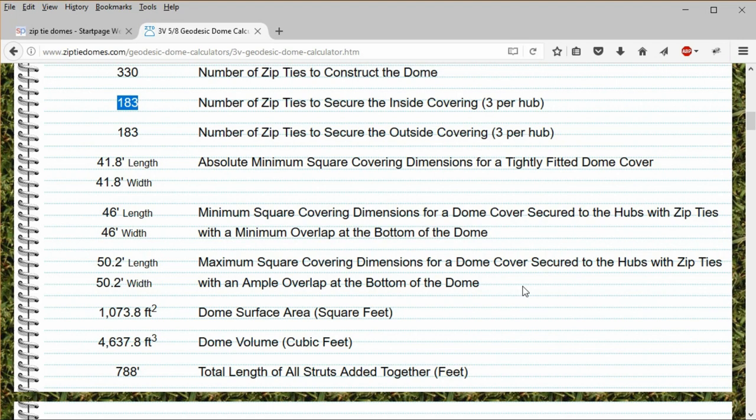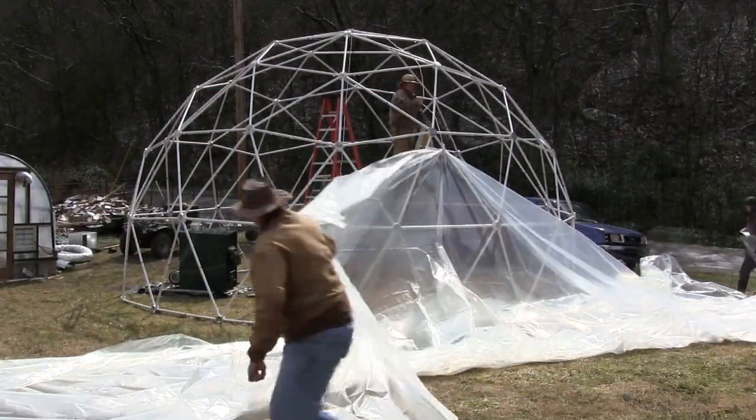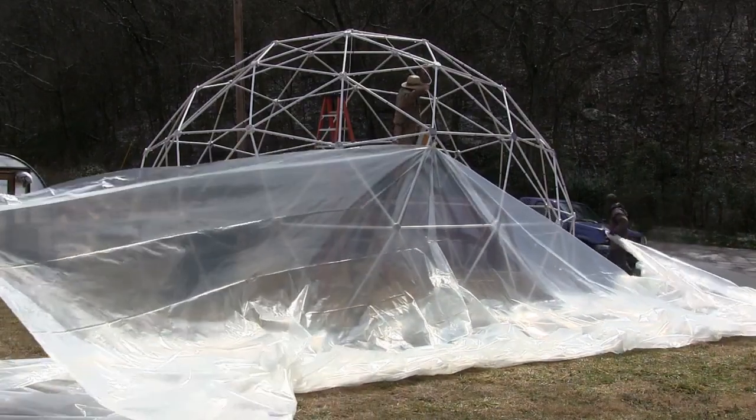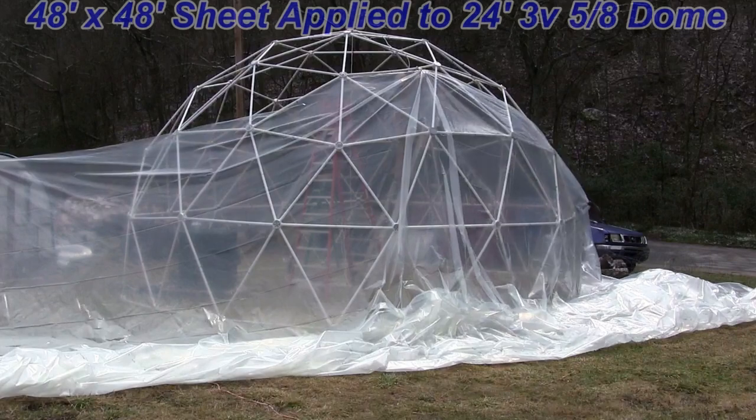The value of 41.8 feet for the absolute minimum square covering dimensions for a tightly fitted cover is the distance from the bottom of the dome over the top of the dome and back down the other side. The values of 46 feet and 50.2 feet for the minimum and maximum covering dimensions secured to the hubs with zip ties indicates that a 48 by 48 sheet would be the perfect size for this dome as seen in this video clip.